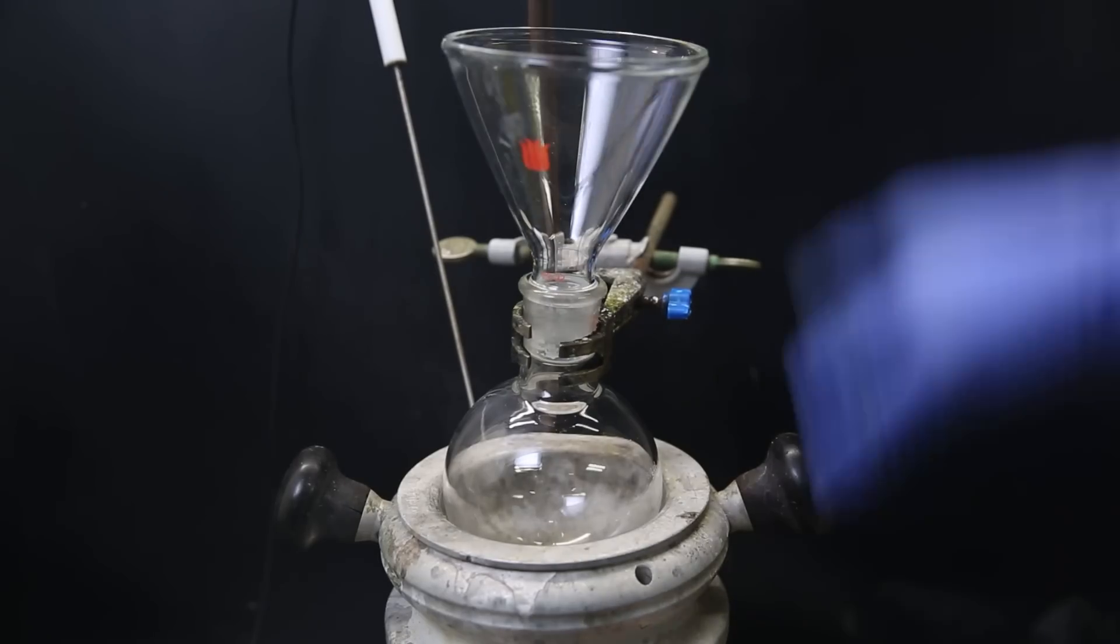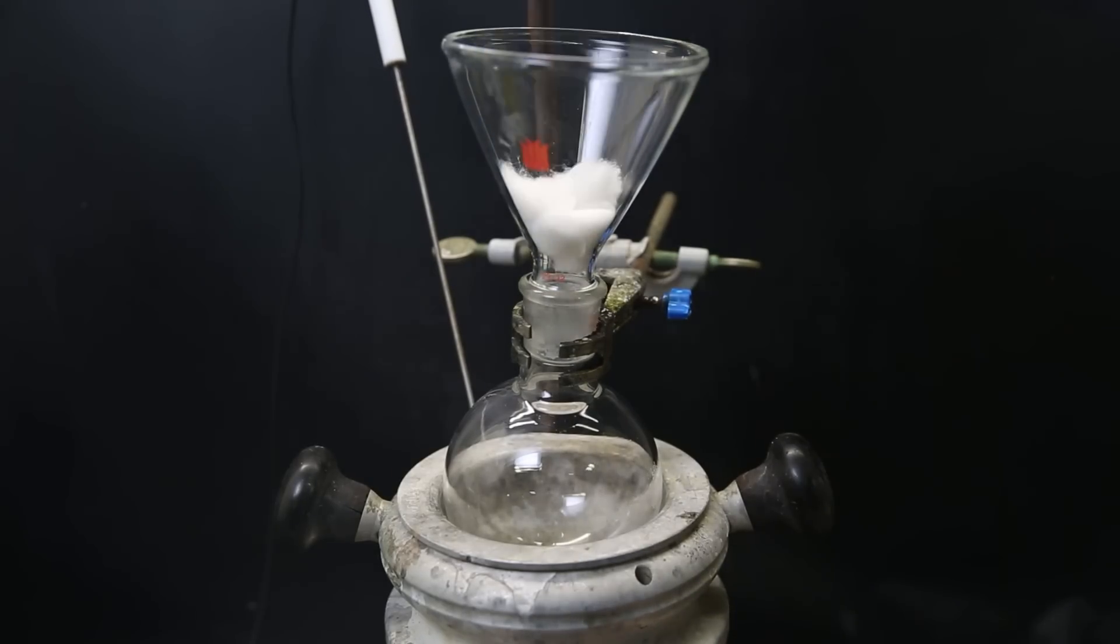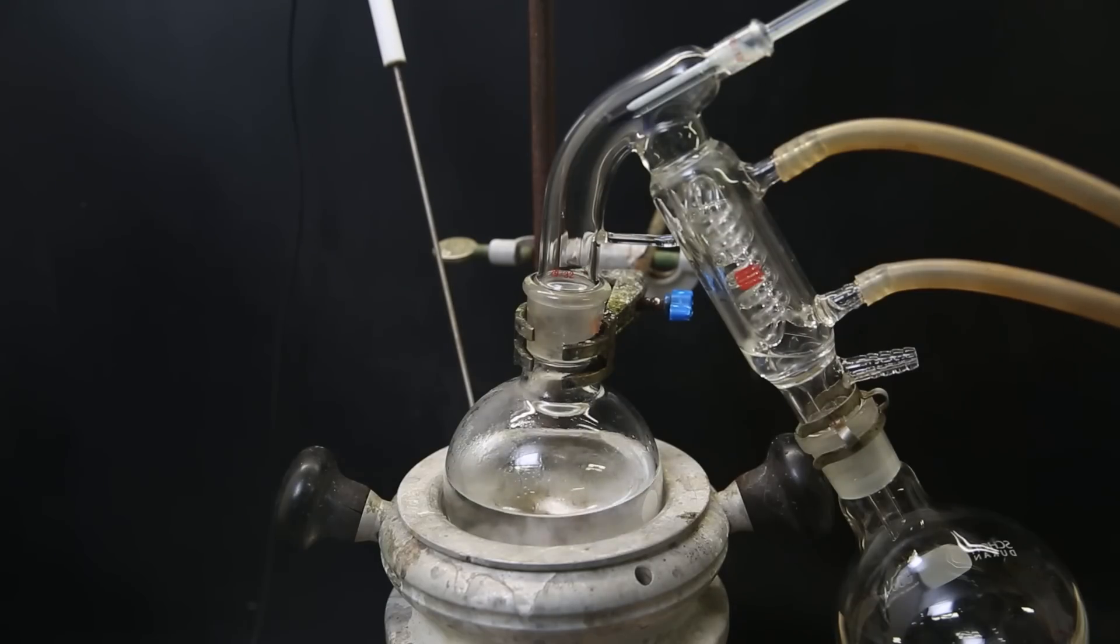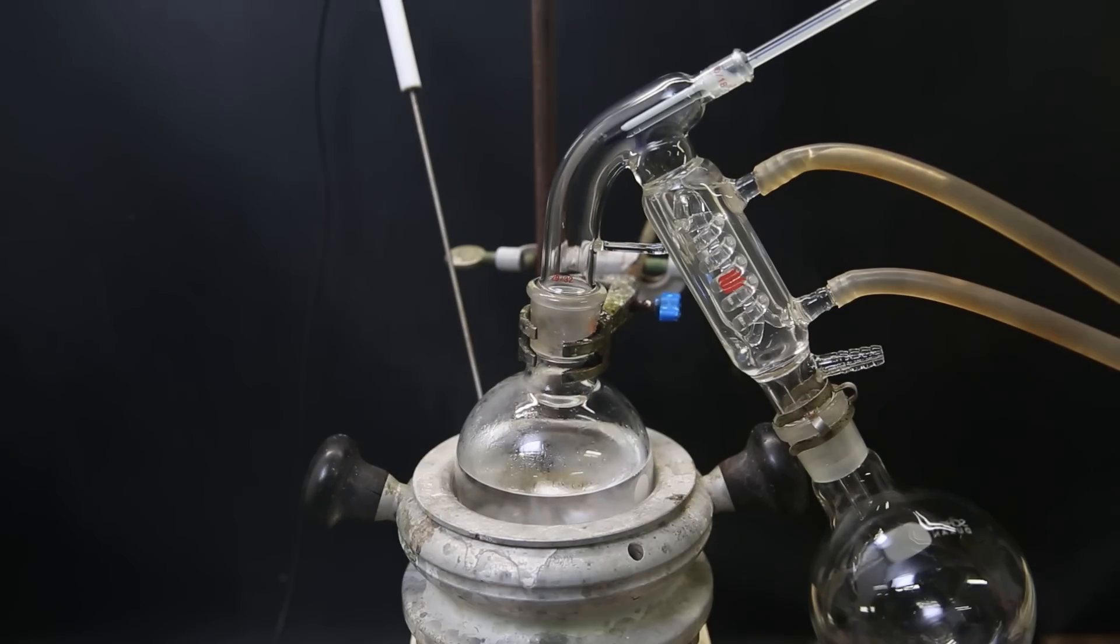I then set up a flask in a heating mantle and filter the dry dioxalane through some cotton. I hold the funnel up so that the air can move, and I then add a stir bar. Now I set this up for distillation to distill off all of the dioxalane, which has a boiling point of 74°C.